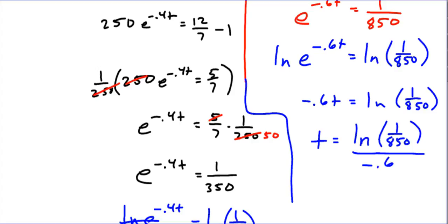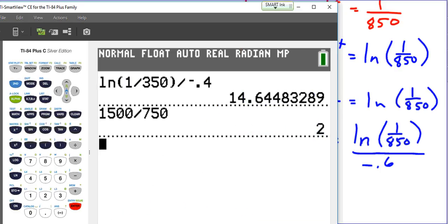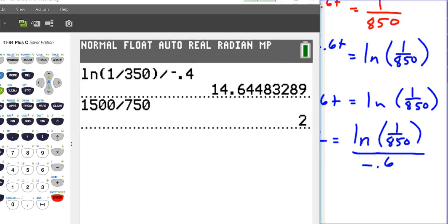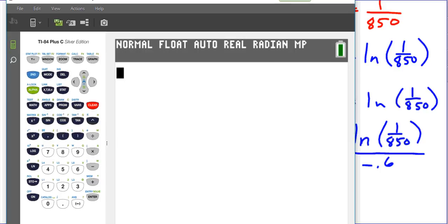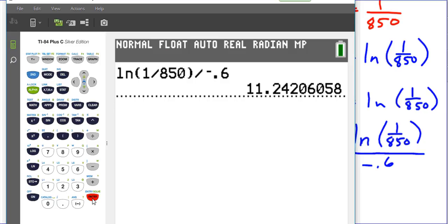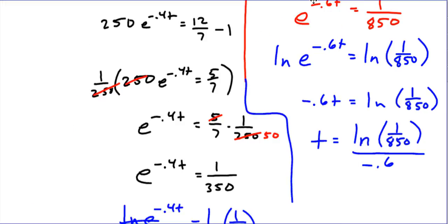If you go on our calculators, once again, we're going to take natural log of 1 over 850, divide that by negative 0.6, enter, and we have here 11.242. So we'll write that down here, 11.242, and there we have our answer.